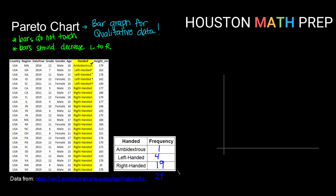Now that I've got my frequencies, I'm ready to put that information on my Pareto chart. Let me start with some labels. First, I need a title — this is a Pareto chart for dominant hands. My horizontal axis always represents my class, so this is dominant hand. My vertical axis is going to represent my frequency. Instead of having a numerical scale along the horizontal axis, we simply place the labels for our categories along it, making sure that our bars will decrease from left to right.